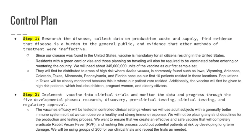Step one: research the disease, collect data on production costs and supply, find evidence the disease is a burden to the general public, and evidence that other treatment methods were ineffective. Since our disease was found in the United States, vaccination will be mandatory for all citizens, all people residing in the U.S. with a green card or visa, and those traveling before re-entering the country. Based on these numbers, we will need about 345 million units of the vaccine. They will first be distributed to areas of high risk such as Iowa, Wyoming, Arkansas, Colorado, Texas, Minnesota, Pennsylvania, and Florida. Texas will be closely monitored because that is where we found our patient zero. Step two: implement the vaccine into clinical trials and monitor data through the five developmental phases — research, discovery, preclinical testing, clinical testing, and regulatory approval.